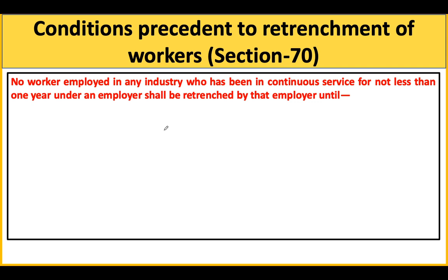Section 70 means that any employer cannot retrench any worker who is in continuous service — that is, workers who are working for one year or more. Section 70 says that any employer cannot retrench such a worker until and unless some particular conditions are satisfied.